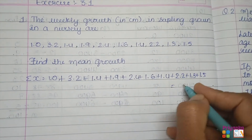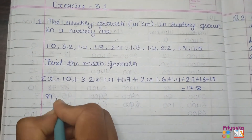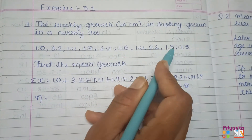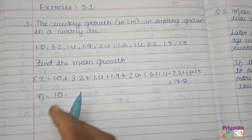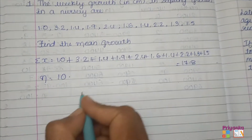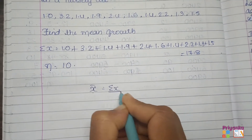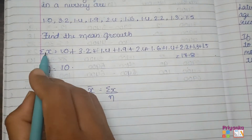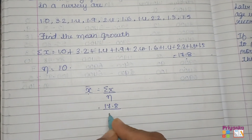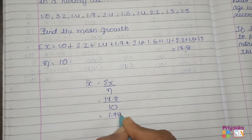Adding all values of x, we get Σx = 17.8. Count the number of observations: 1, 2, 3, 4, 5, 6, 7, 8, 9, 10, so n = 10. The formula of mean is x̄ = Σx / n. Substituting: x̄ = 17.8 / 10, which gives us 1.78 centimeters.